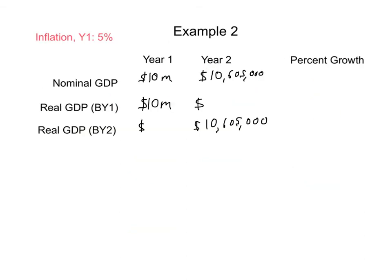Now let's do this with aggregations instead. Let's say that we have a country in which nominal GDP in year one was $10 million and nominal GDP in year two was $10,605,000. We also know that in this country, inflation in year one was 5%. If we don't adjust for inflation and we just use nominal GDP, we're going to see that there is a 6.05% growth rate in nominal GDP.